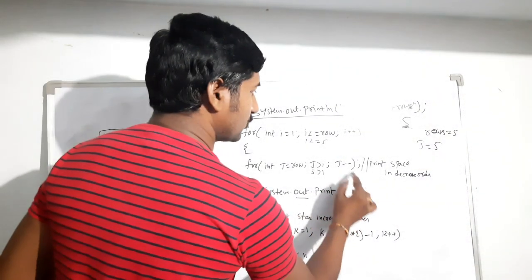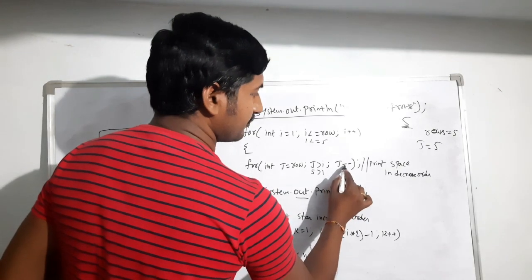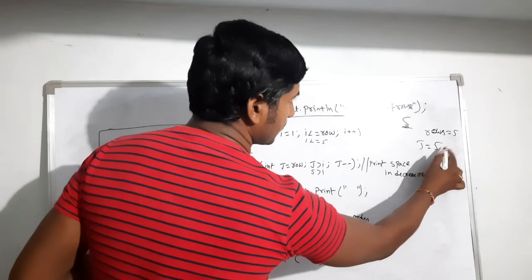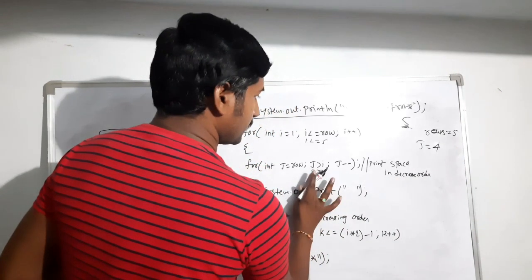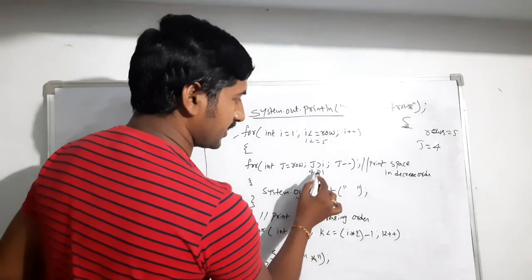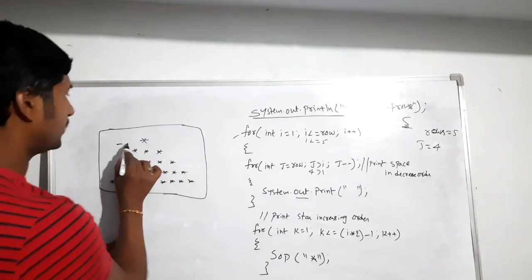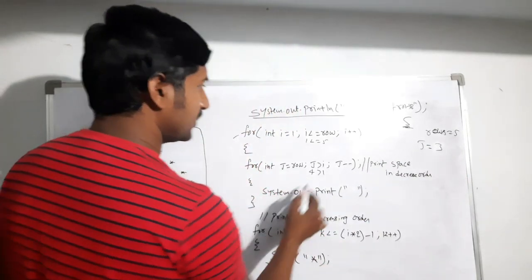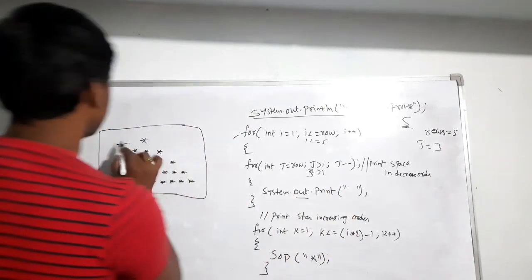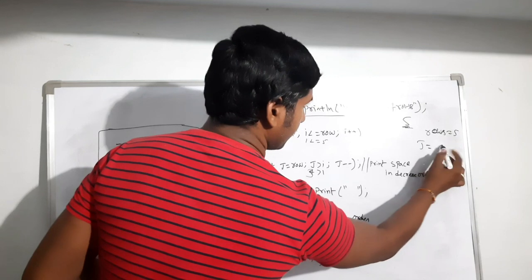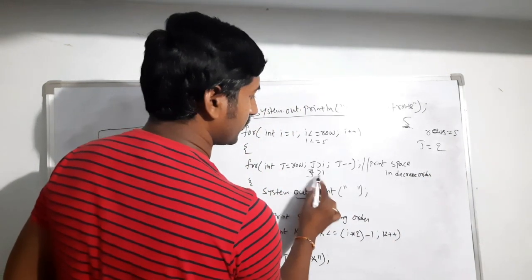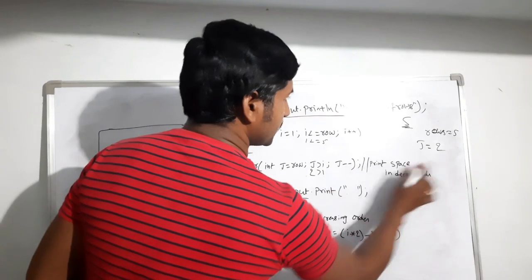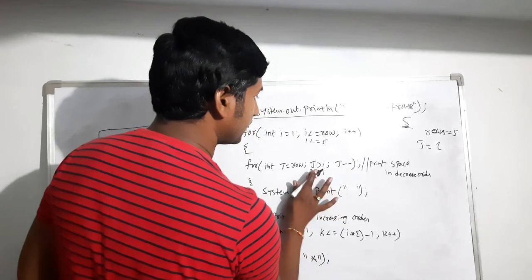It goes back to the inner for loop with the j minus minus decrement operator — j becomes four. Four greater than one: condition true, prints another space. j decrements to three, three greater than one: prints a space. j decrements to two, two greater than one: prints a space. j decrements to one, one greater than one: condition false, so it exits this inner loop.